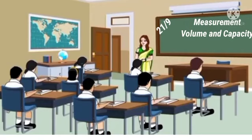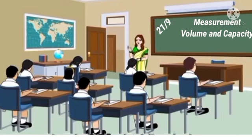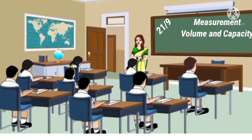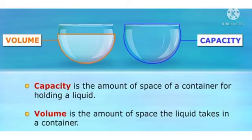Children, I hope you all might have nicely understood how to measure liquid and also the difference between volume and capacity. Remember, capacity is the amount of space of a container for holding a liquid and volume is the amount of space the liquid takes in a container. Understood children? Thank you.